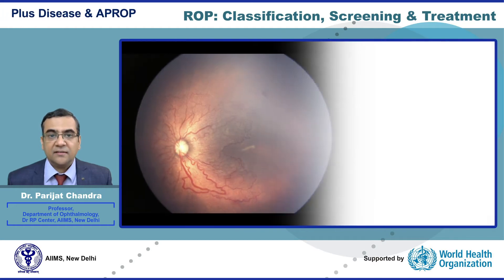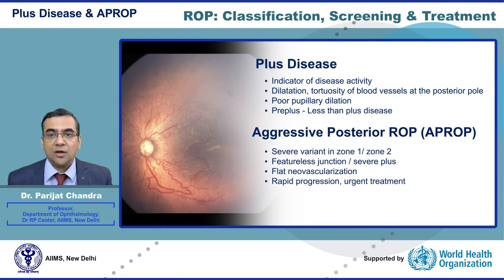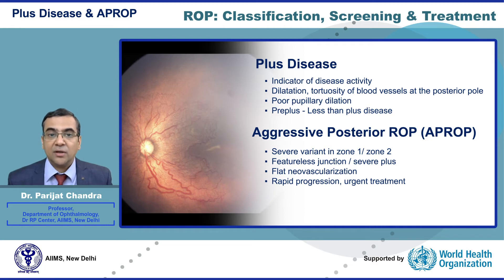Plus disease is an important terminology and indicator of disease severity. It is indicated by dilation and tortuosity of blood vessels at the posterior pole and is associated with poor pupillary dilation. Pre-plus indicates dilation and tortuosity less than plus disease but more than normal. Aggressive posterior ROP, or APROP, is a severe disease variant seen in zone 1 or posterior zone 2. It has a featureless junction between vascular and avascular retina, severe plus disease, often flat neovascularization, and can progress rapidly to retinal detachment, requiring urgent treatment.